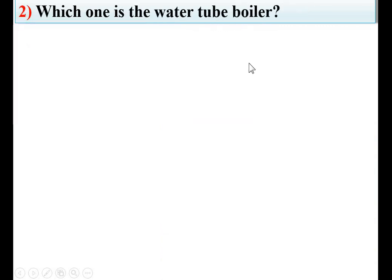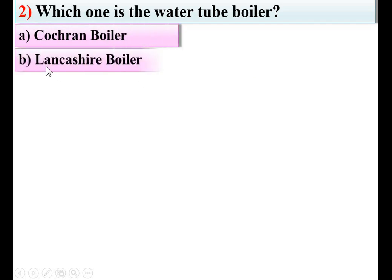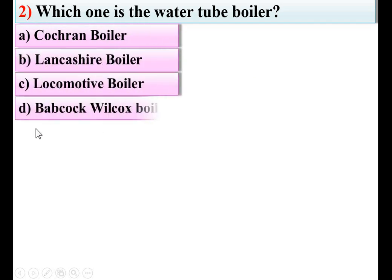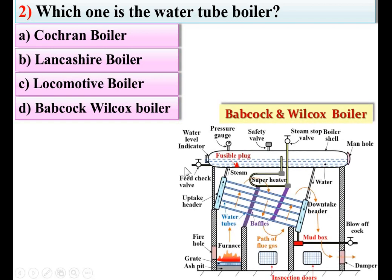Which one is the water tube boiler? Options: Cochran boiler, Lancashire boiler, locomotive boiler, Babcock and Wilcox boiler. The answer is Babcock and Wilcox boiler. Here you can see the tubes — if the water is inside the tube, it is called a water tube boiler. In the Babcock and Wilcox boiler the water is inside the tubes, so D is the right answer.